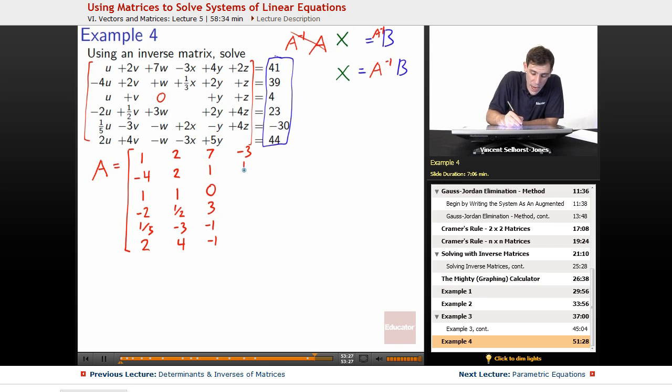Negative 3X, 1/3 X, 0X, 0X, 0X, 2X, negative 3X. Plus 4Y, 2Y, 1Y, 2Y, negative 1Y, 5Y, 2Z, 1Z, 1Z, 4Z, 4Z, 0Z.